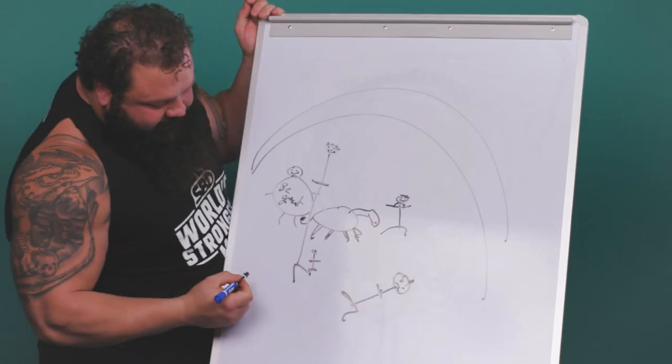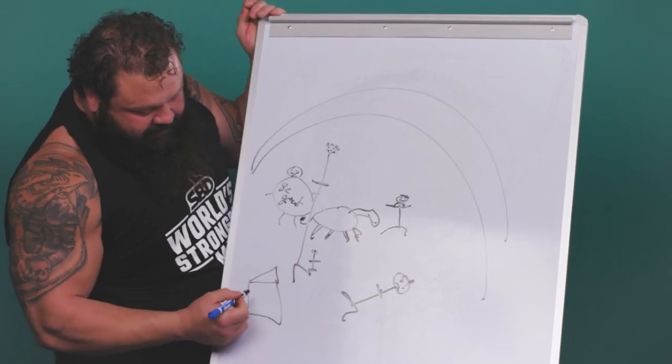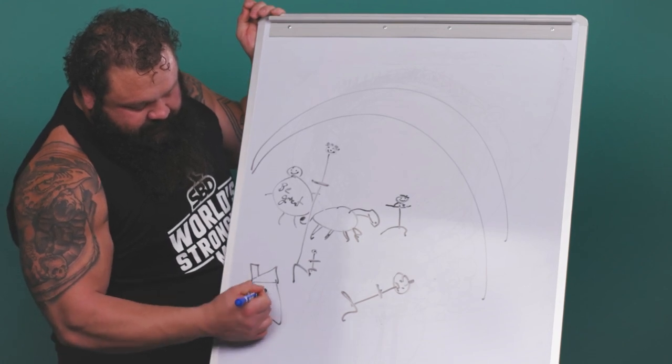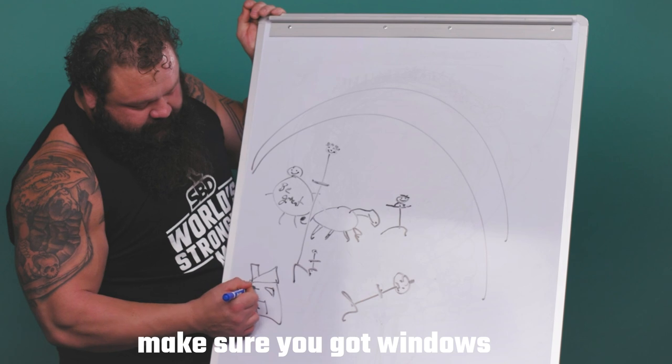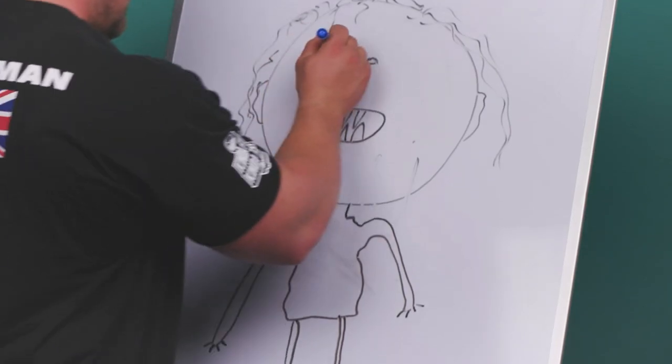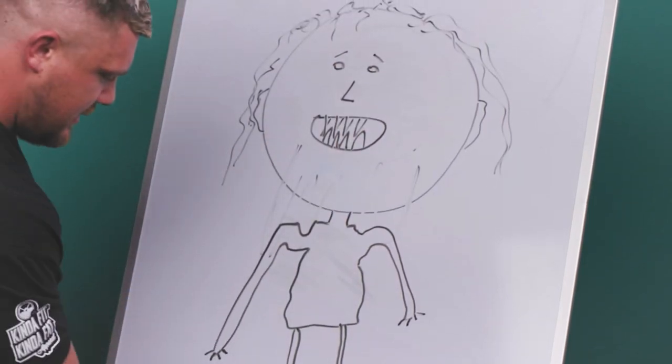He's got our house that we all live in together. Right here. The chimney. Door. Make sure you have windows so you can see outside.